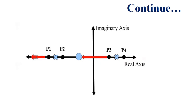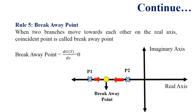Rule 5 is basically the breakaway point. When two branches move towards each other on the real axis, this coincident point is called the breakaway point. The breakaway point occurs between two adjacent open-loop poles on the real axis. For example, pole P1 has a branch on the right-hand side and pole P2 has a branch on the left-hand side, so these two branches are adjacent and the point where they meet is the breakaway point.